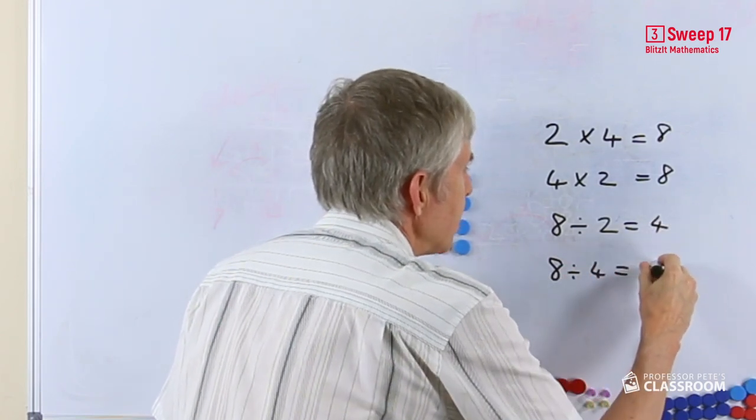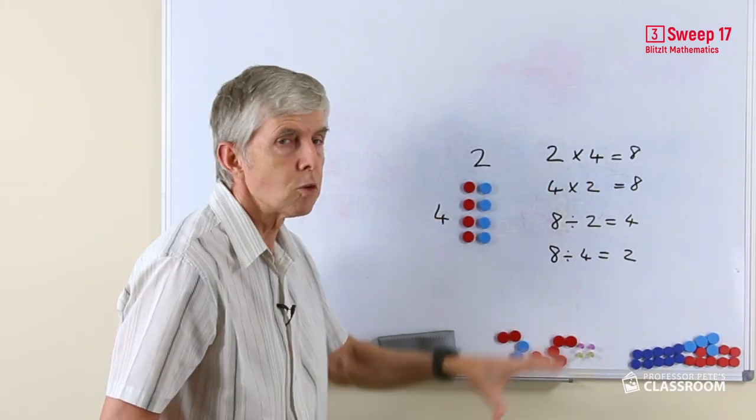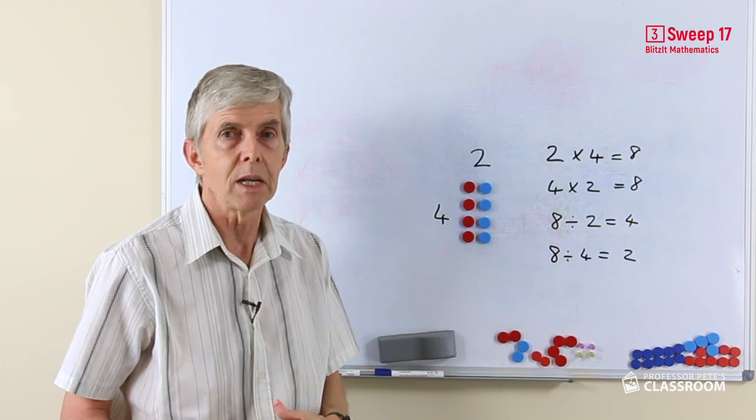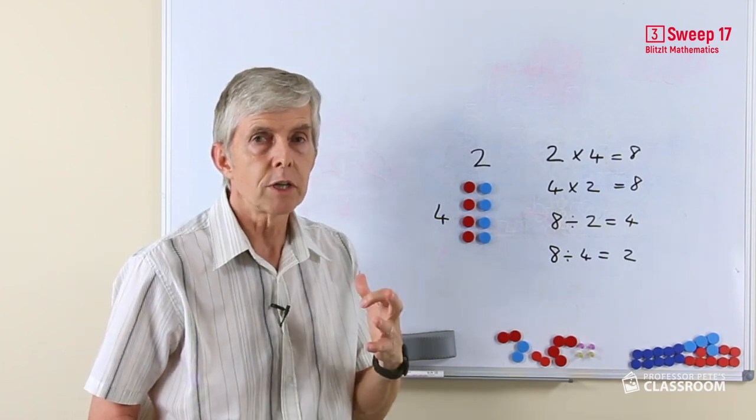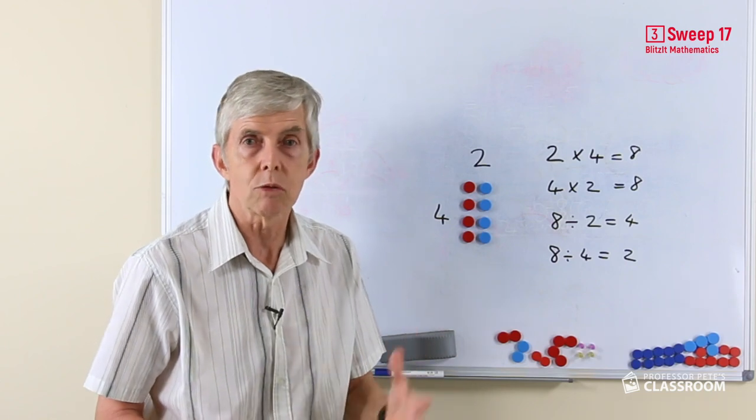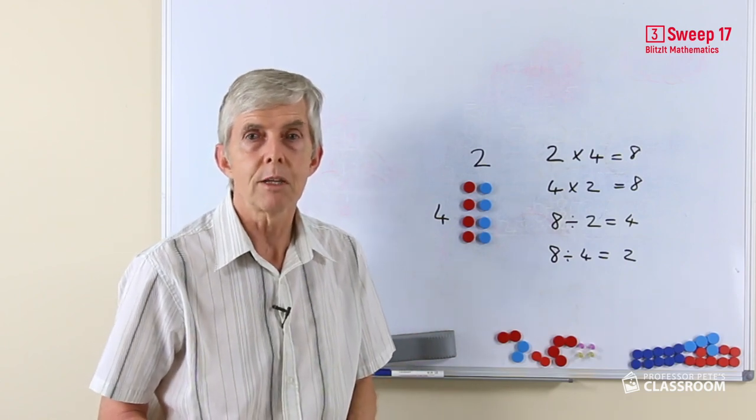Of course those numbers reappear and this forms as we've mentioned before in addition and subtraction a number fact family. Eight, two and four go together with the two operations multiplication and division in a family. They relate to each other mathematically.